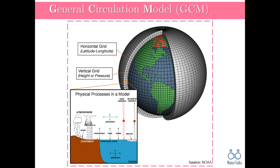As you know, general circulation models or global climate models or GCMs are the most advanced tools for simulating the Earth's climate. As GCMs are numerical models, they divide the atmosphere and ocean into thousands of three-dimensional grid cells to solve physically based mathematical equations using supercomputers. The spatial resolution or the horizontal size of the grid cells is about 200 kilometers, which is reasonable and practical to represent the entire Earth's climate.